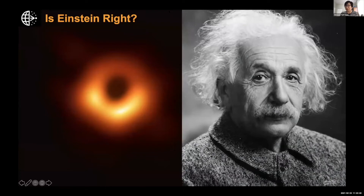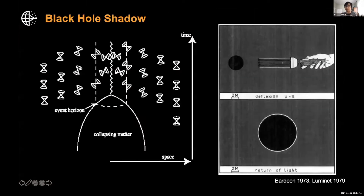For the EHT, our goal is trying to answer whether Einstein is right in the strong-field gravity regime. The left image — the orange donut you may have seen — is the first horizon-scale image of a black hole. We've observed black holes for a very long time, but until a few years ago we were not able to resolve the event horizon scale.